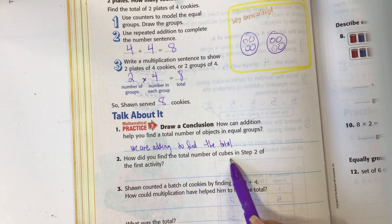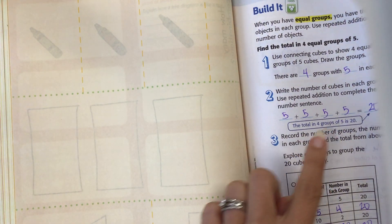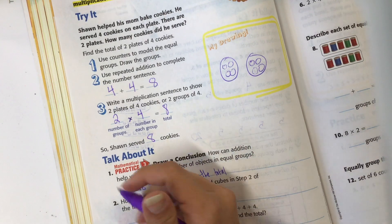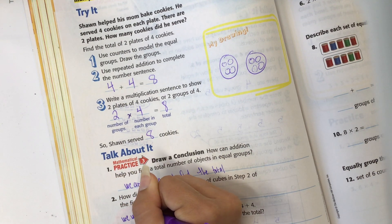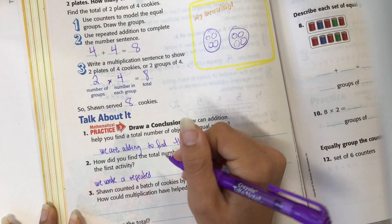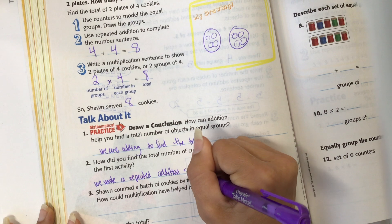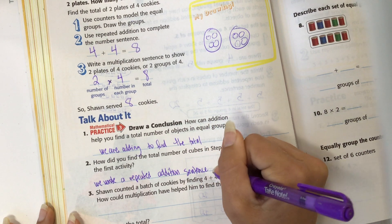How did you find the total number of cubes in step two of the first activity? So the first activity here, what did we do? We wrote a repeated addition. So we wrote a repeated addition sentence to solve.